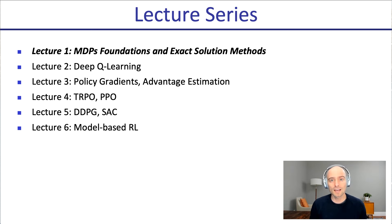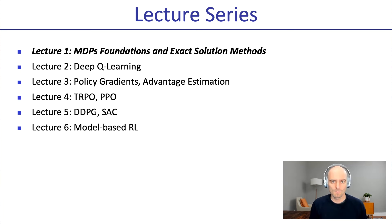This is part of a six-lecture series. In lecture two, we'll look at deep Q-learning; lecture three, Policy Gradients and Advantage Estimation; lecture four, TRPO and PPO; lecture five, DDPG and Soft Actor-Critic; and lecture six, we'll wrap it up with model-based RL. These six lectures will allow you to build a very strong foundation for understanding all the work going on in reinforcement learning these days, and maybe do some of your own work.